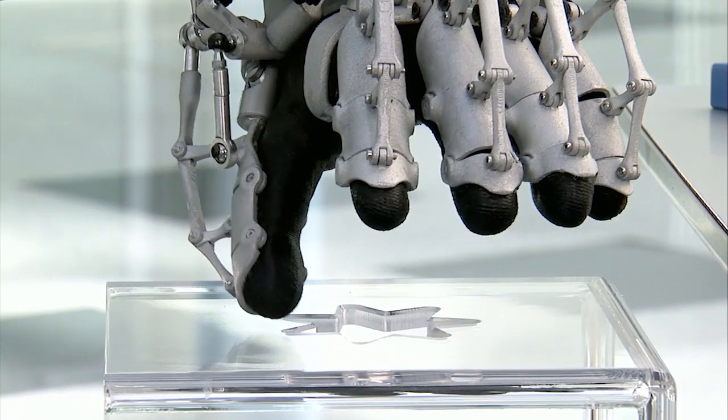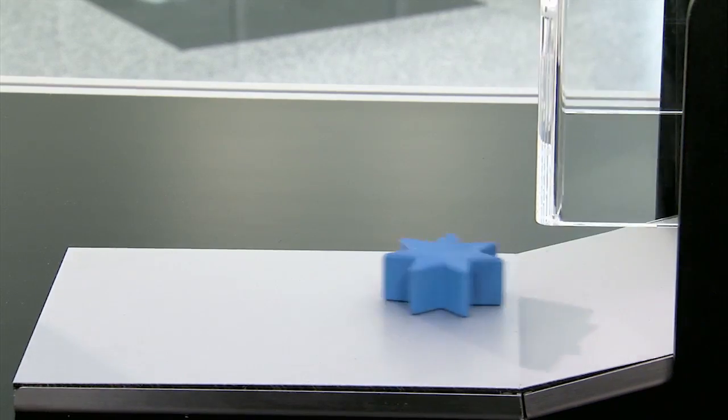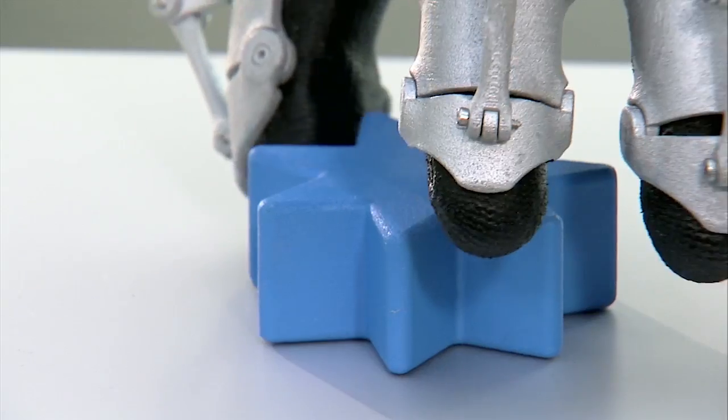The technology which allows objects grasped by a robot to be felt is called Force Feedback System.